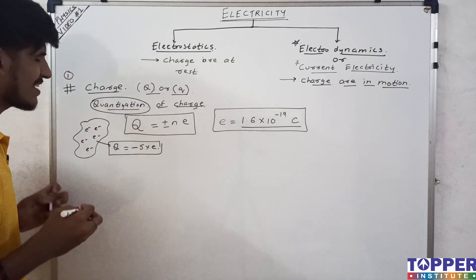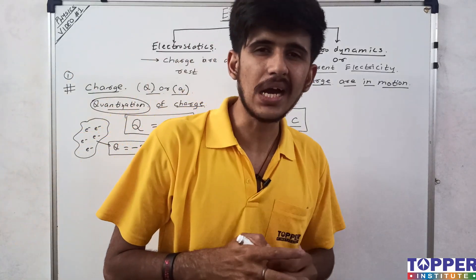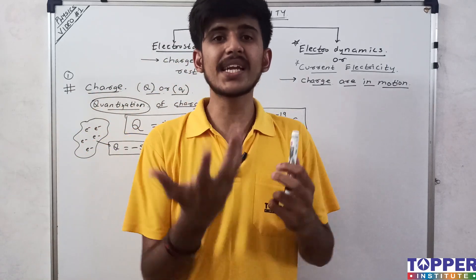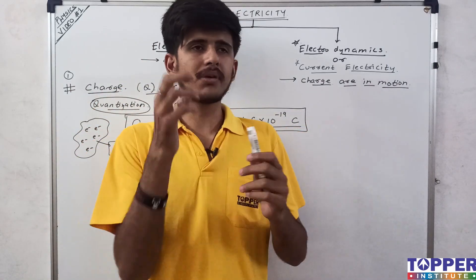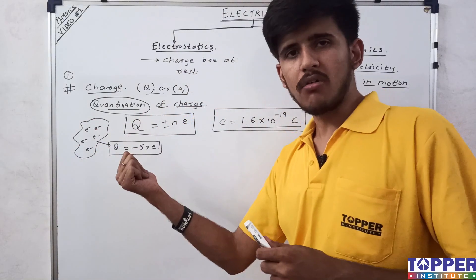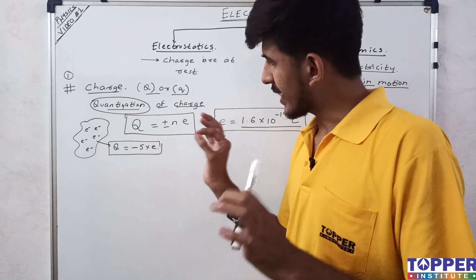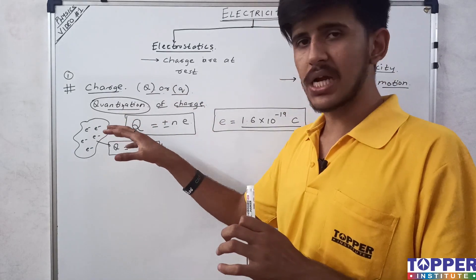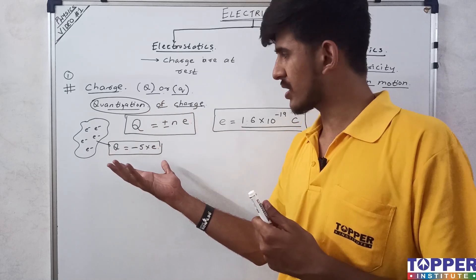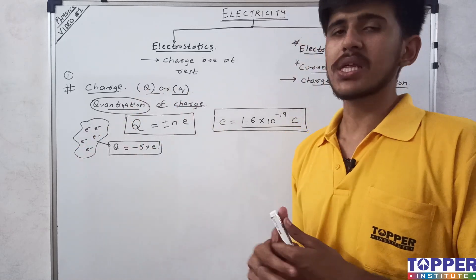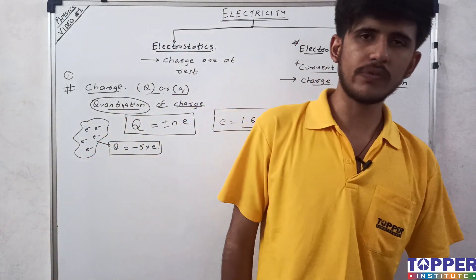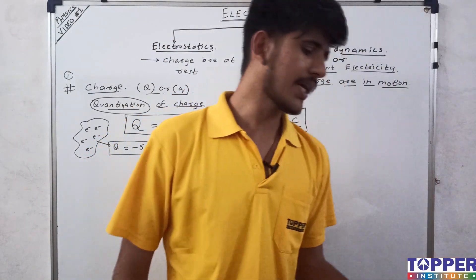Quantization means that charge is quantized — meaning it is discrete. Discrete means it can be counted. On any body, you can count how many electrons or protons are present. So the charge on a body is always a countable, whole-number multiple of the elementary charge e. This concept is called quantization of charge.